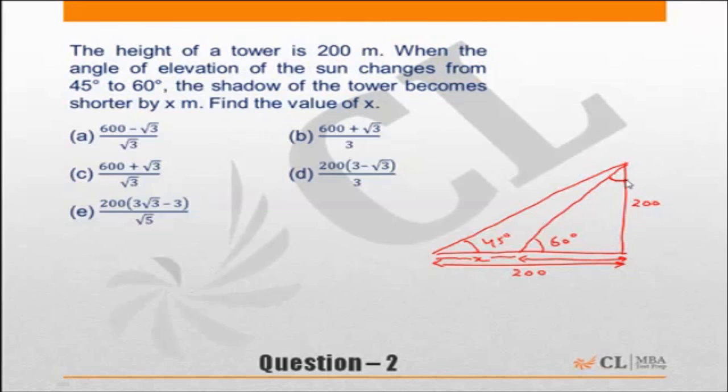We know that for a 30-60-90 triangle, the ratio of the sides are 1 is to root 3 is to 2.